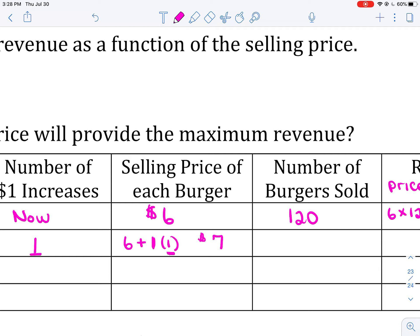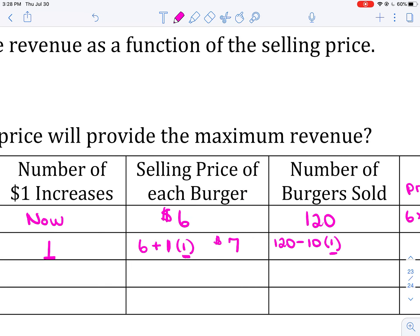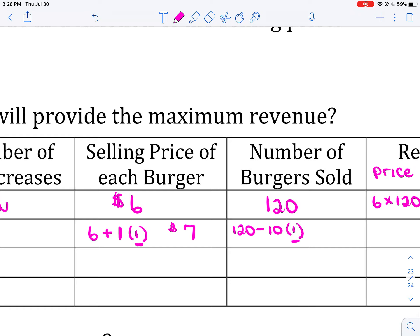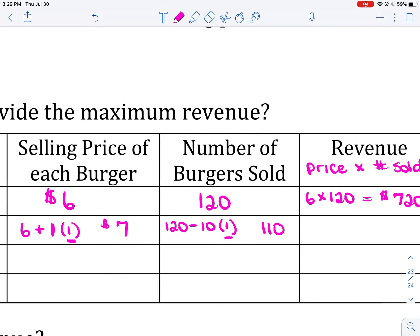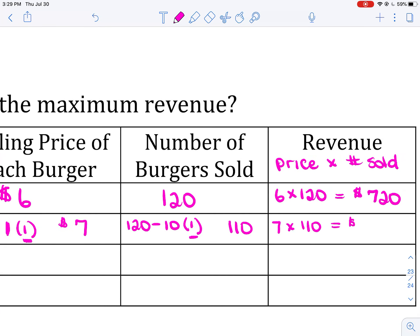How many burgers will I sell? I'll sell 10 less burgers for every $1 price increase. So I take 120 and lose 10 customers one time — because I only increased the price once — giving 110 burgers. My revenue would be $7 times 110, which equals $770.